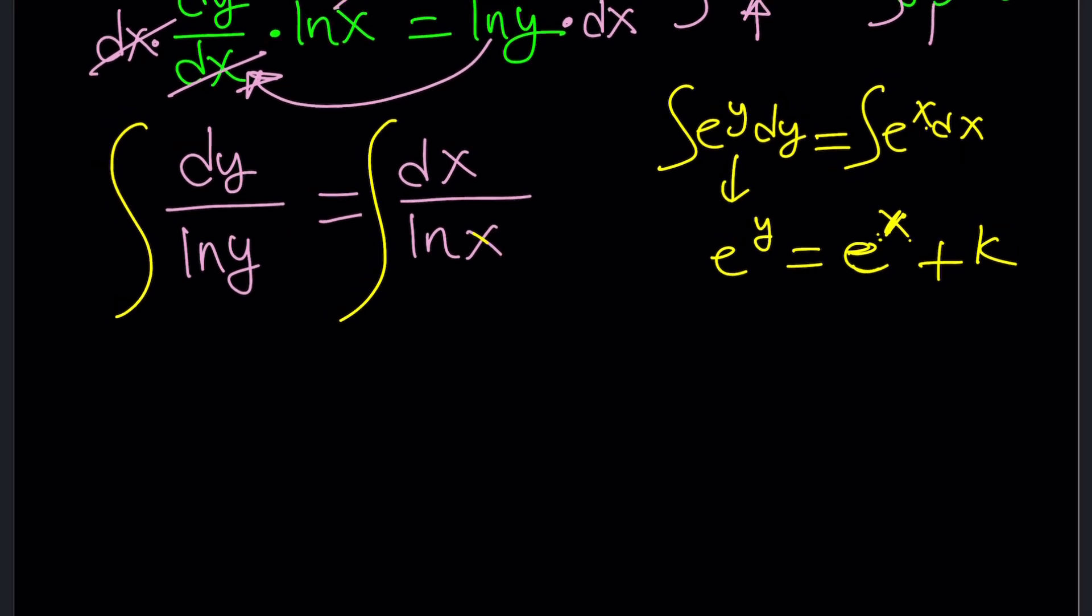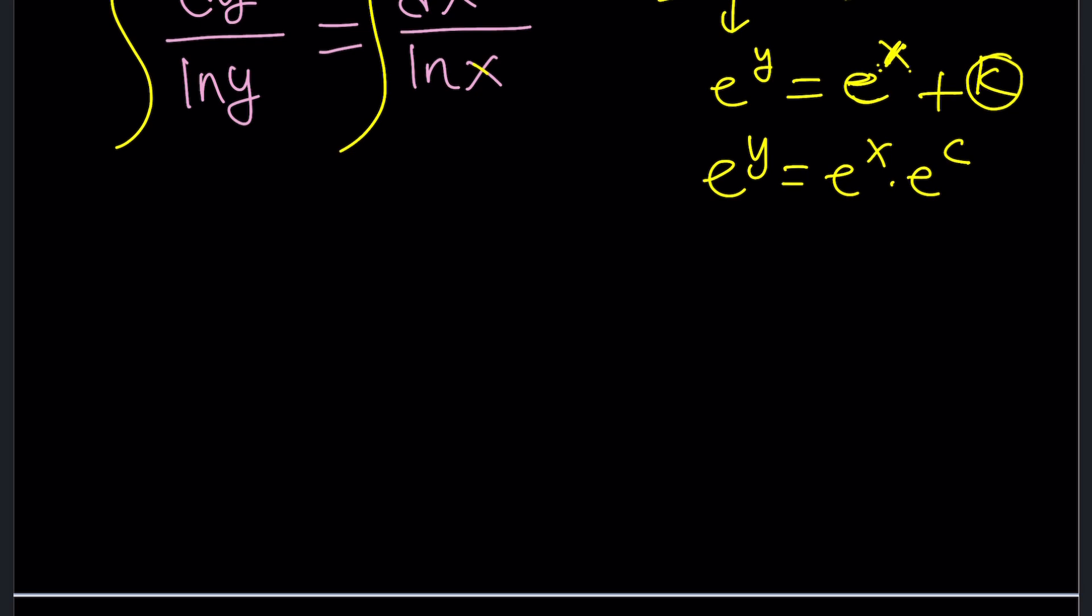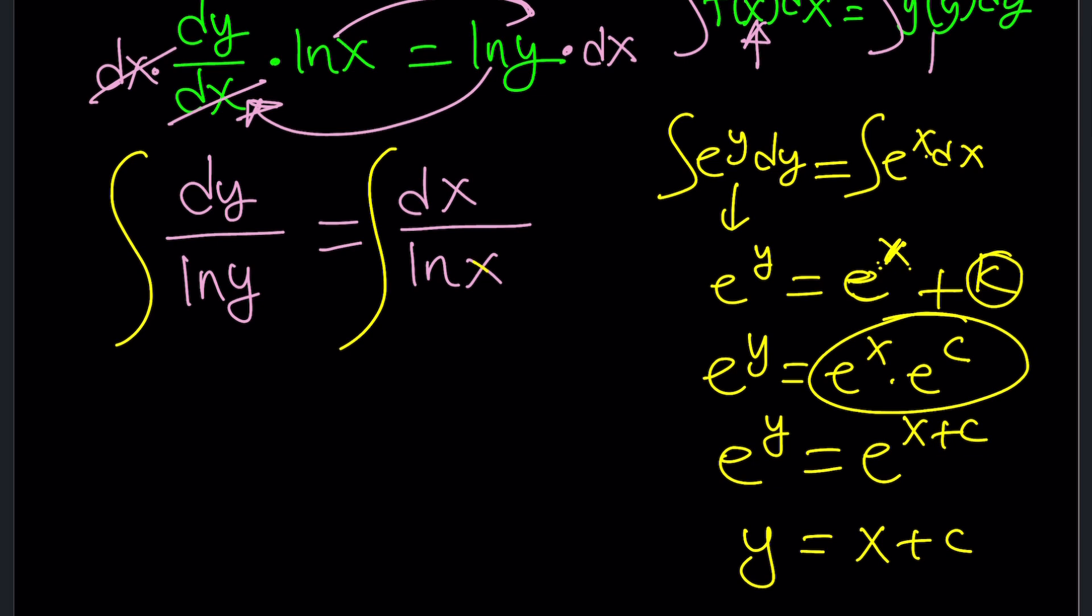And from here, are you able to solve for y? Yes. If you just write k as e to the power of c, some constant again, because if k is constant and c is constant, this can be done, right? And then from here, you're going to get e to the y equals e to the x plus c by multiplying these two together, and then this would eventually lead to y equals x plus c. So y and x differ by a constant, that doesn't have to be zero, so do we have a similar scenario here?